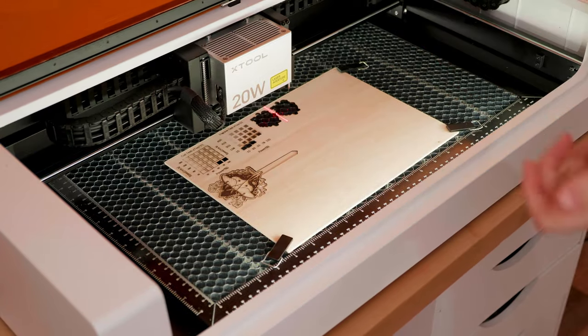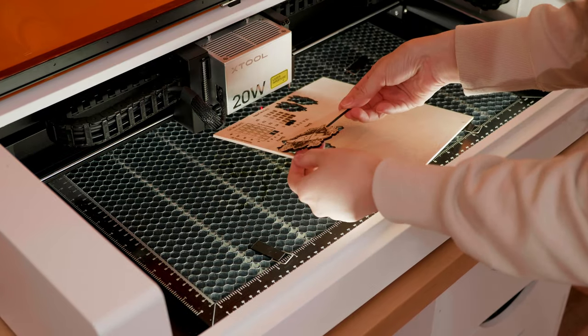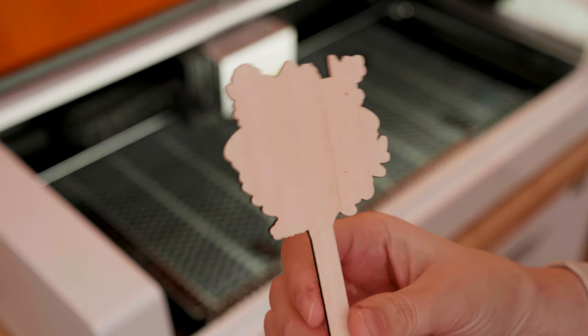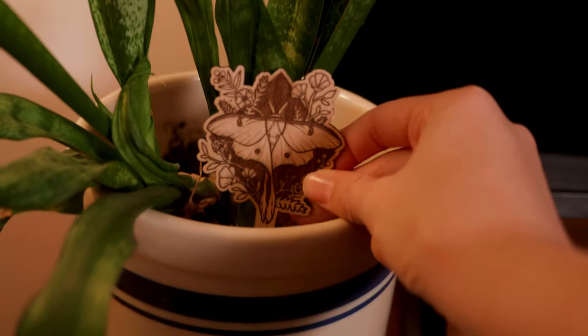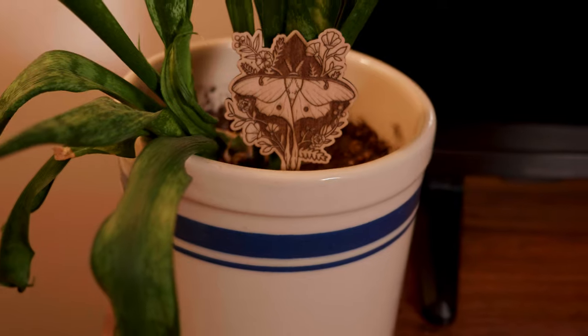The third product I believe is called a plant stake and the way I made it, it's just kind of decor that you add to your plant. I think it's adorable and it's super easy to make. So this is another one that I am highly considering adding to my shop.